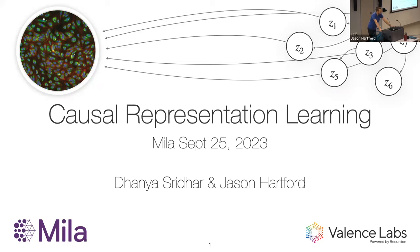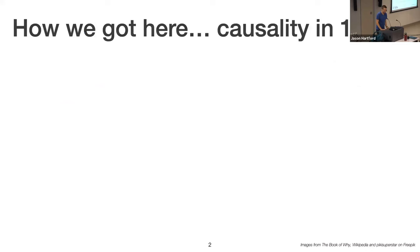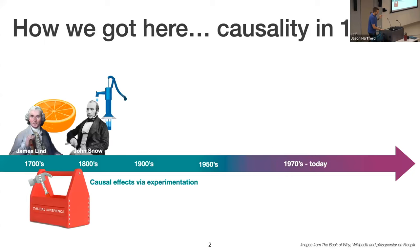This is a talk about what I think is the future of causal inference — obviously a controversial statement. Before we can talk about the future, I think it's good to start by thinking about how we got here, and take a look backwards. At the risk of gross oversimplification, here's causality in one slide.